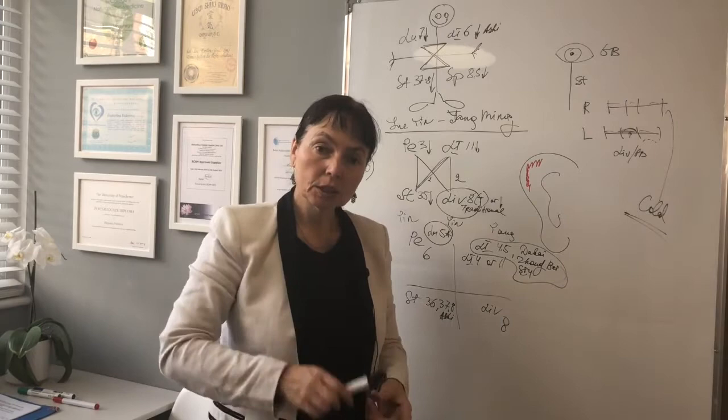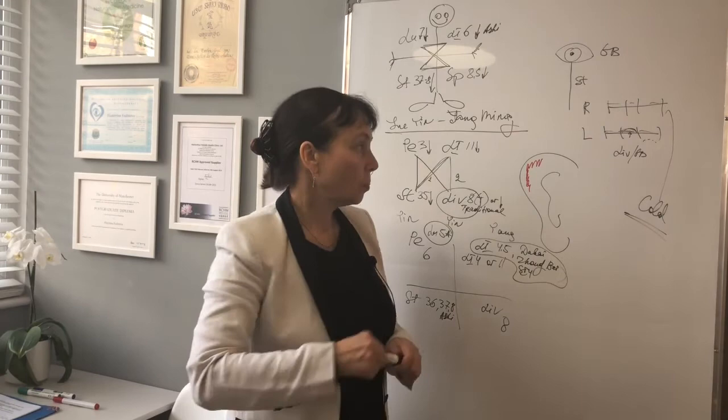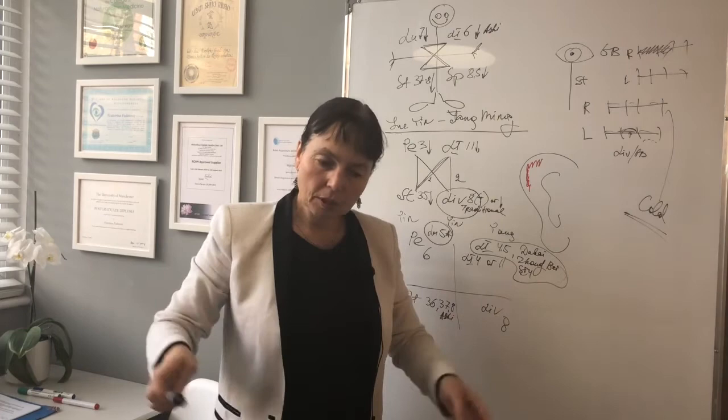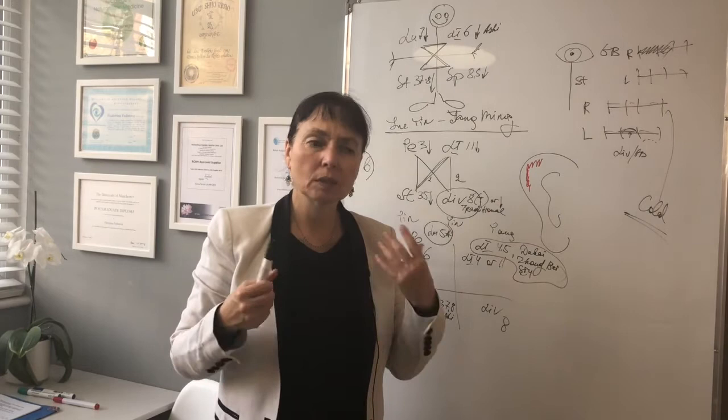Let's compare two patterns in a very simple way — two patients. One came with a general cold condition. Pulses are scattered on the right side — Sun Nguan, general cold condition. Whole body a bit achy, a bit sneezy, a bit cold, just a bit of coughing. Which pattern will you apply? Tai Yin Yang Ming.